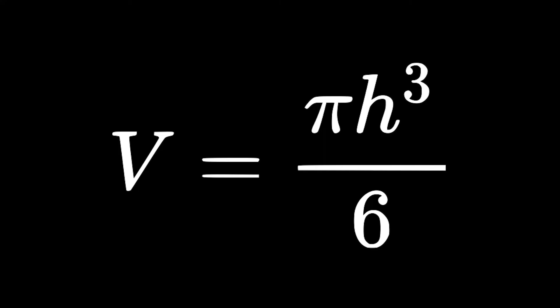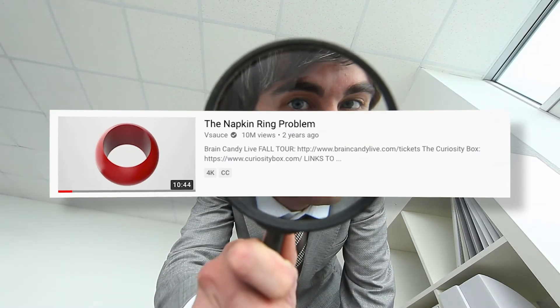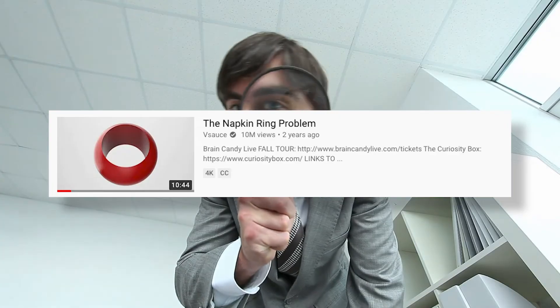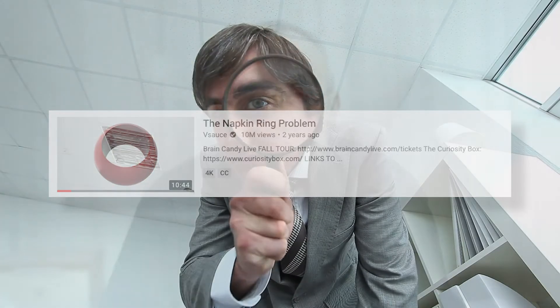It turns out that the radius of the original sphere cancels out in earlier equations as you're deriving this final one, and it's ultimately inconsequential to a napkin ring's volume. If you're curious about how that equation was formulated, I'll link to Vsauce's video on this topic in the description below, because he goes into a far more in-depth discussion of it.